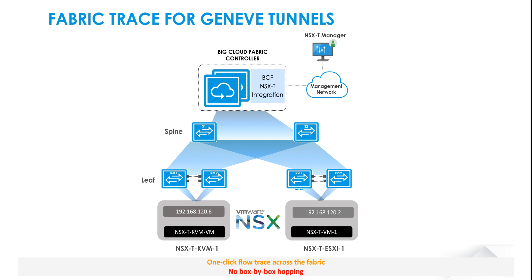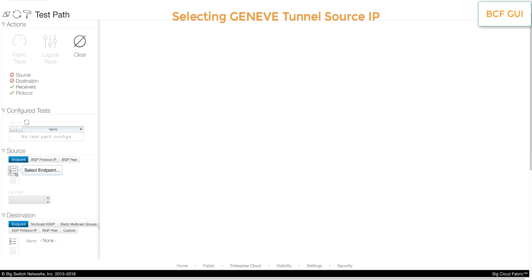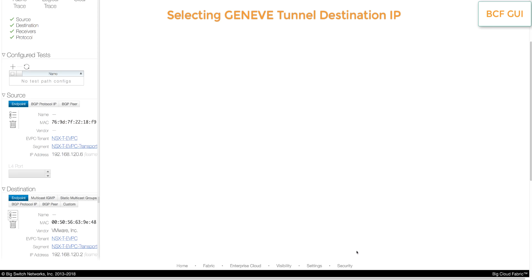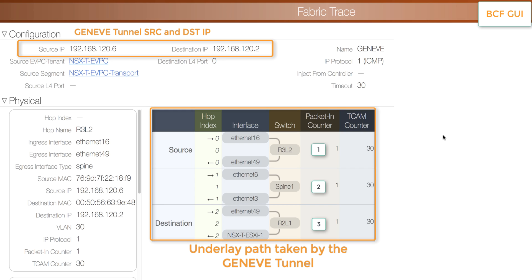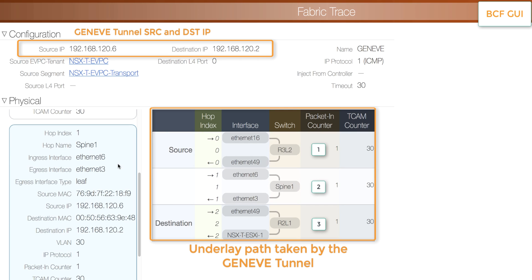Lastly, we will see how we can trace the paths taken by the Geneve tunnel across the BCF underlay. Fabric trace allows admins to trace the end-to-end path of a packet with a single click and no box-by-box hopping. A sample result of the fabric trace is shown here, which shows the path taken by the Geneve tunnel between NSX-T transport nodes across the BCF underlay. Using BCF test path, we can select the Geneve tunnel source IP and destination IP and simply run the fabric trace. The result shows all the switches the packet traversed along with the ingress and egress interface for each hop. If the trace is incomplete, you can see how far the packet traversed along the fabric and pinpoint the offending switch. Additional details about each hop are also presented on the left-hand side.